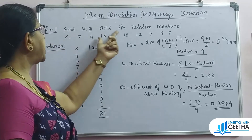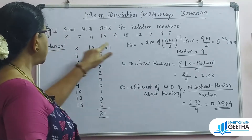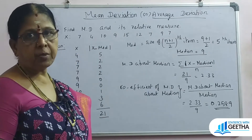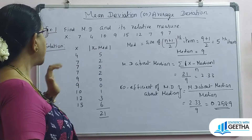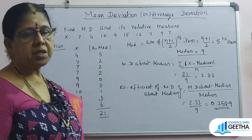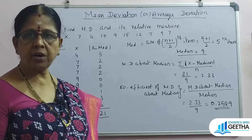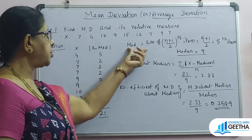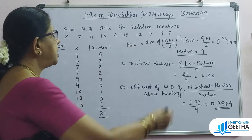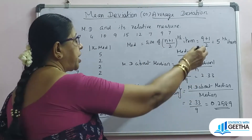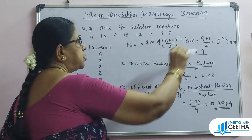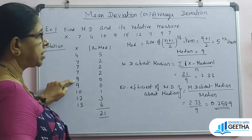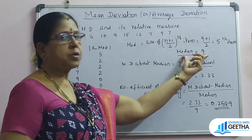Now, find mean deviation and its relative measure. Mean deviation is about median, so we arrange the values in ascending order and find the median. The formula for median position is the size of the (n+1)/2-th item. Here n equals 9, so (9+1)/2 equals the 5th item. After arranging in ascending order, the 5th item is 9, therefore median equals 9.